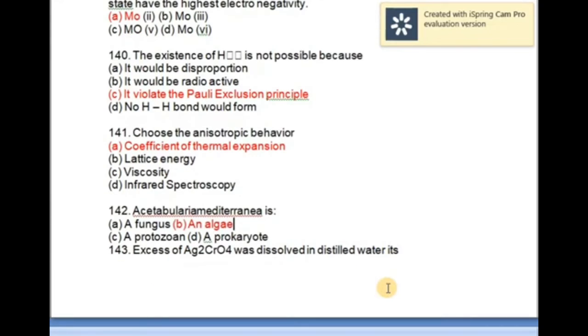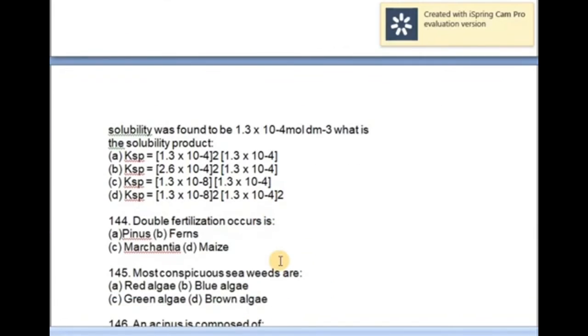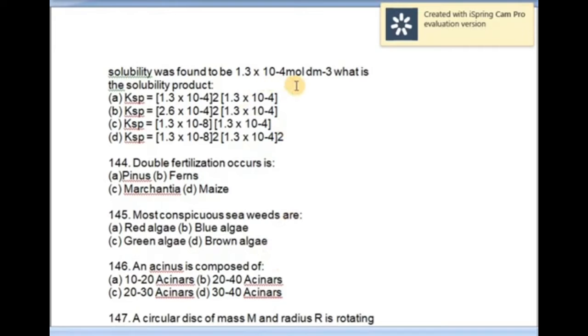Excess of Ag2CrO4 was discovered in distilled water. Its solubility was found to be 1.3 × 10^-4 mol per liter cube. What is the solubility product? The correct option is B. A total magnification by 2.3 × 10^-5 mol per liter cube.